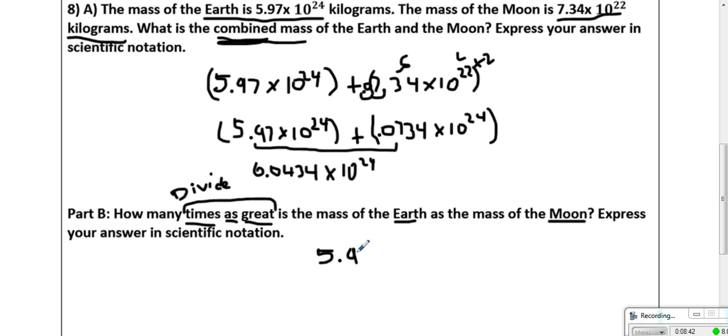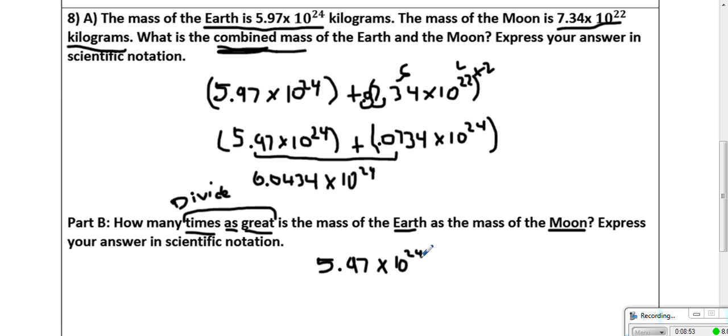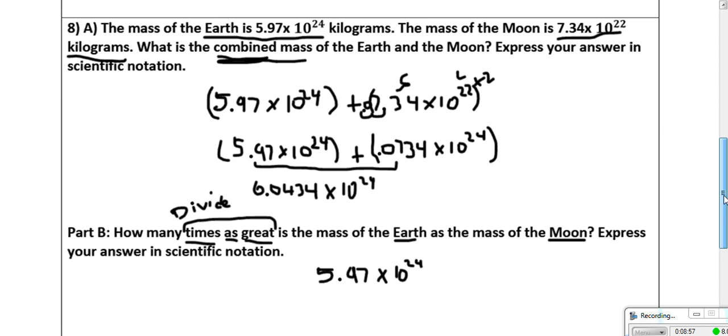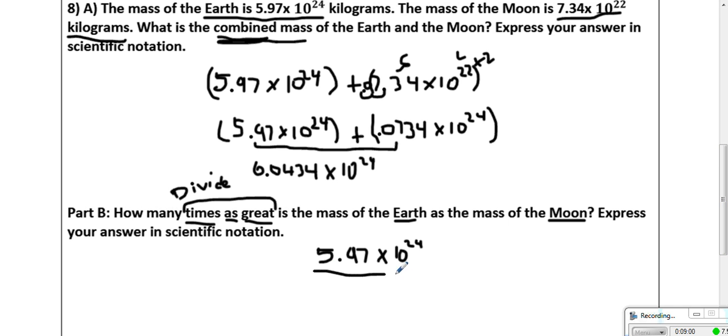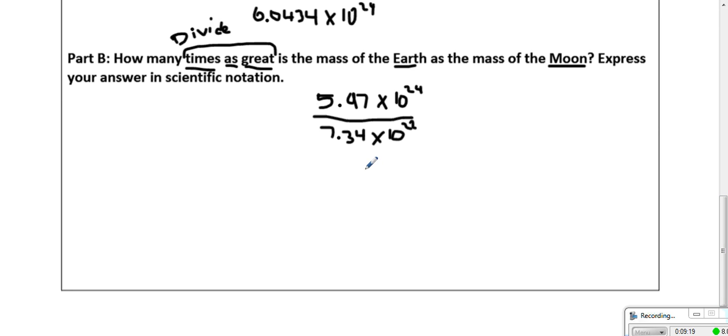Is the mass of the Earth as the mass of the Moon. So we're going to take the mass of the Earth, 5.97 times 10 to the 24th, and divide it by the mass of the Moon, which is, I'm going to put this in a big fraction, 7.34 times 10 to the 22nd. This is not like addition and subtraction. This is division. So what we're going to do is we're just going to divide the first numbers. The exponents do not have to be the same. So when you put this into your calculator, you're putting 5.97 divided by 7.34.